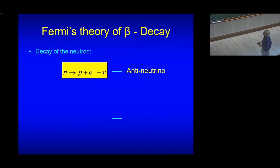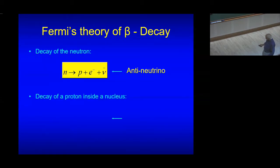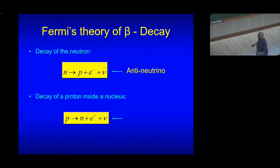Now let's go back to Fermi's theory of beta decay. What Fermi said — truly revolutionary at the time — is that the neutron inside the nucleus spontaneously decays to a proton, producing an electron and a neutrino. One of his students, Giancarlo Wick, worked out the theory for the reverse reaction, which we today call inverse beta decay, where a proton inside the nucleus decays to a neutron, plus a positron, plus a neutrino.